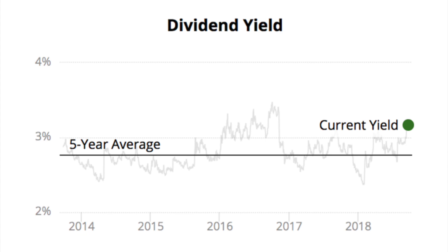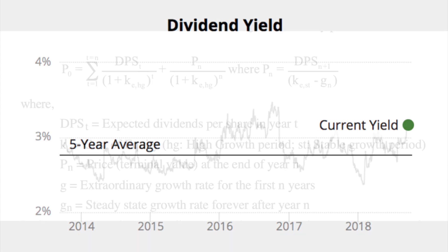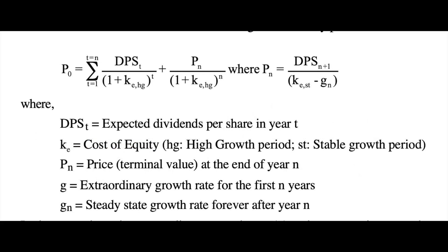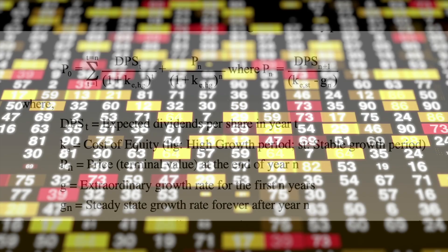My second favorite valuation technique, and the one I will talk about today, is the two-stage dividend discount model. As the name implies, this technique is strictly for dividend paying stocks — more so for dividend stocks with histories of dividend growth. I'll explain how the model works, show you an example, and then talk about its application and limitations. As we walk through the model, pay attention to the assumptions I make, as these are the weakest points and will have the largest impact on the final results.